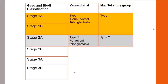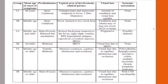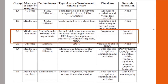Regarding classification, the initial Gass and Blodi classification has three stages with each stage divided into A and B subgroups. Yanuzzi et al. divided it into type 1 and type 2, and the MacTel study group also uses type 1 and type 2. For today's discussion, we are focusing on type 2A macular telangiectasia, commonly called parafoveal telangiectasia (PFT) or MacTel.